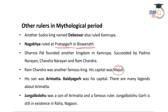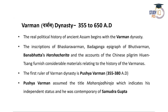Ram Sundar's son Arimoto had his capital at Budagara, and there are many legends associated with him — including one that his head resembled the head of a fish (Ari fish), hence the name Arimoto. Arimoto's son Jungal Balahu was a famous ruler, and a fort or rampart called Jungal Balahu Garh still exists in the Raha region of Nagaon. These are the traditional rulers of the mythological period.